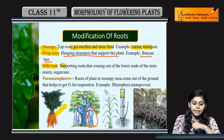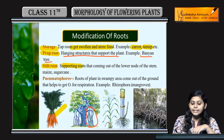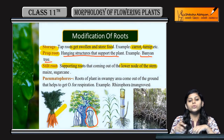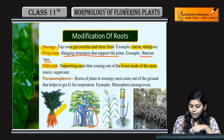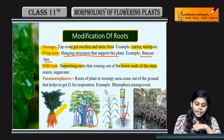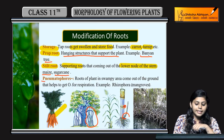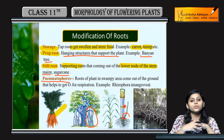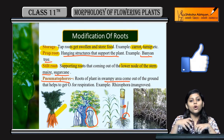Next are the stilt roots. Stilt roots bhi supporting roots hoti hai, ye bhi support provide karti hai. Ye nikalti hai from the lower node of stem — stem ki jo lower node hai, wahan se ye roots grow karti hai. Ye bhi support provide karti hai. Ye maize aur sugar cane mein hoti hai.